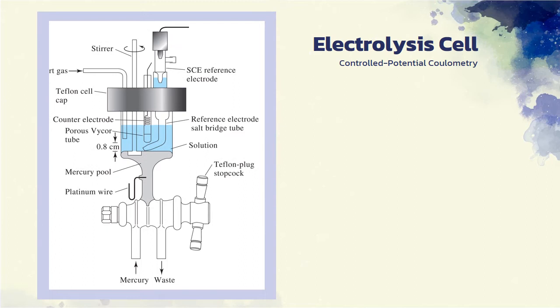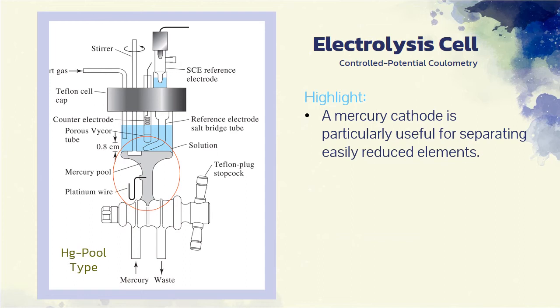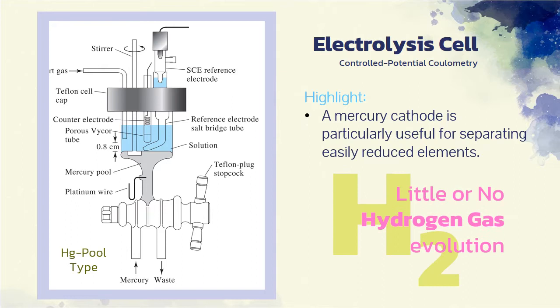The second type of cell shown in the figure is a mercury pool type. A mercury cathode is particularly useful for separating easily reduced elements as a preliminary step in an analysis. In addition, however, it has found considerable use for the coulometric determination of several metallic cations that form metals soluble in mercury. In these applications, little or no hydrogen evolution occurs even at high applied potentials because of the large overvoltage of hydrogen on mercury.